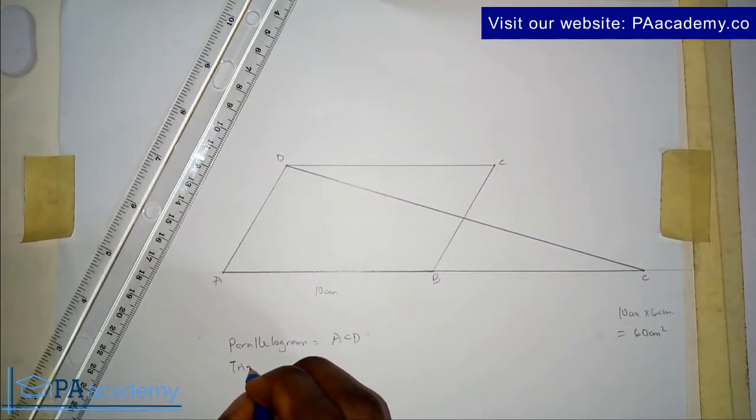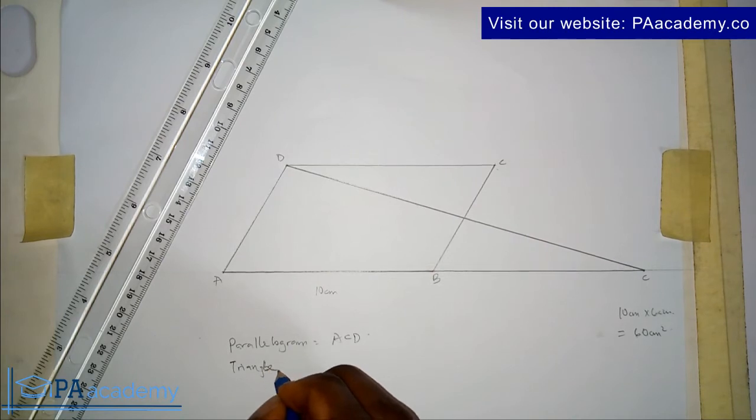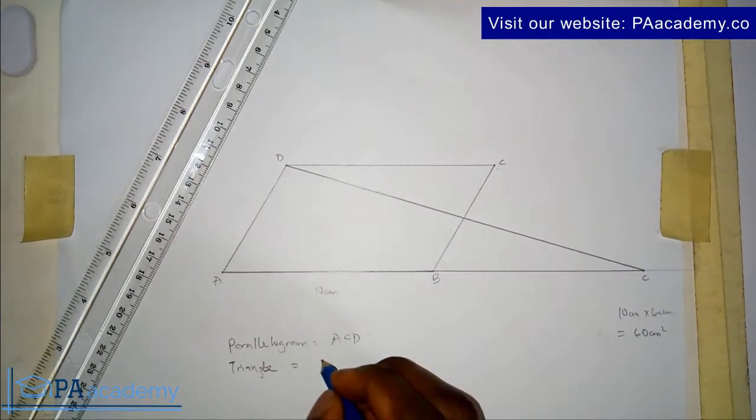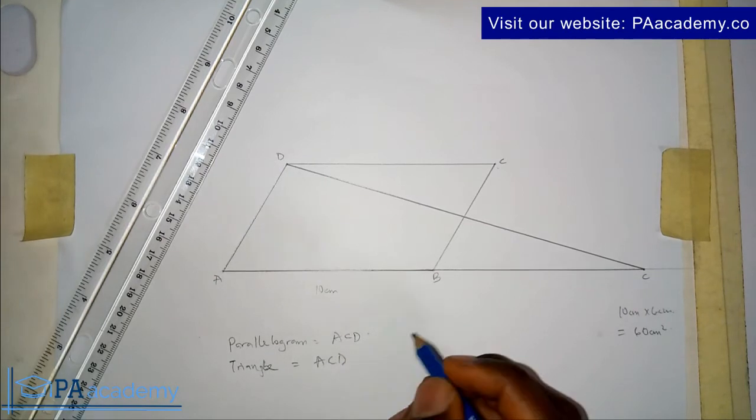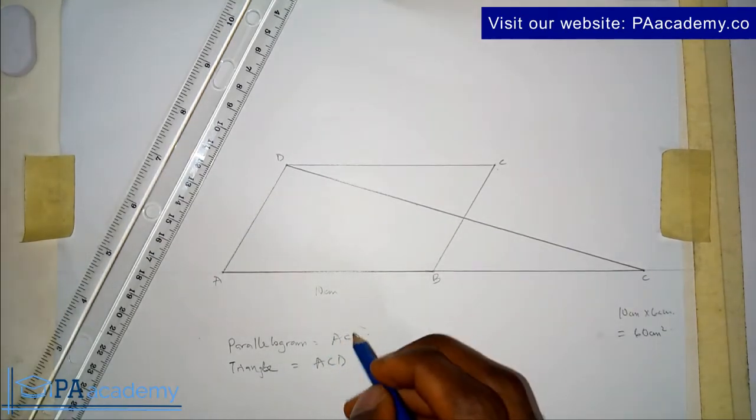While the triangle, the triangle is AED. The parallelogram is ABCD.